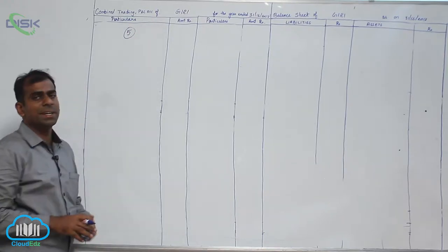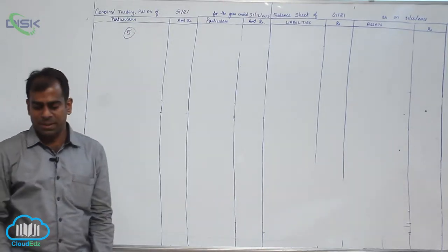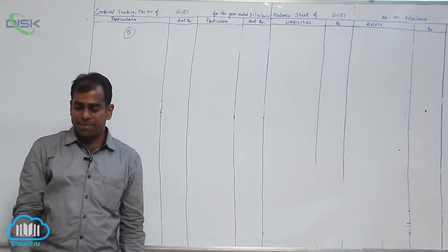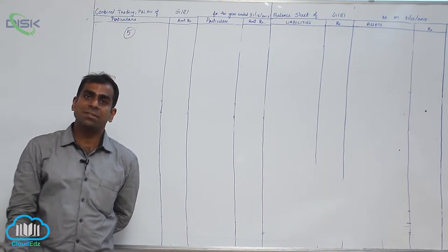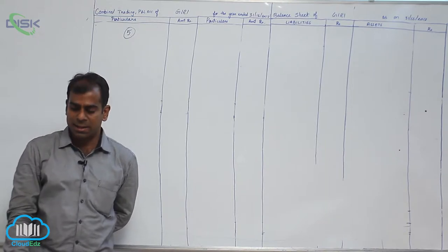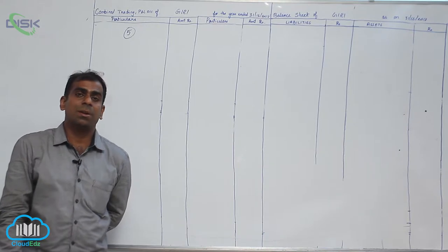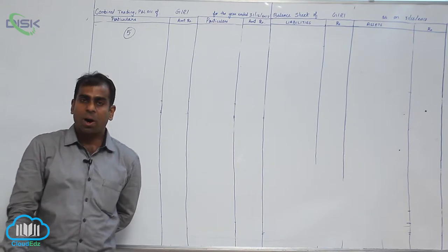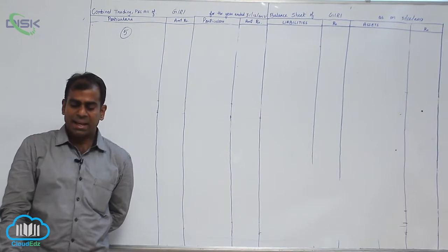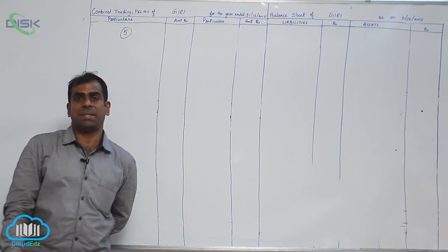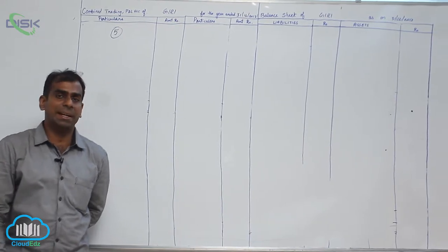We are discussing the fifth problem. For the first item — debit balances in your trial balance — cash is a real account, mark it R. Then factory insurance is nominal, mark N. Audit charges are nominal and an indirect expense, so audit charges will be taken in the Profit and Loss account.